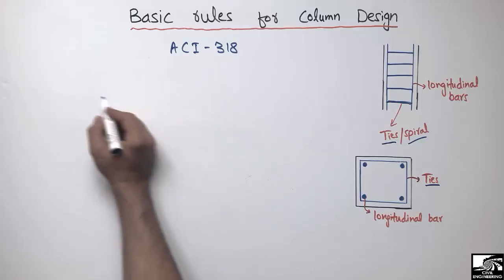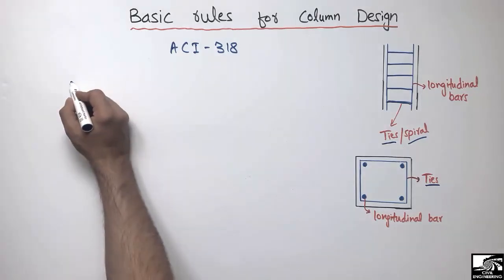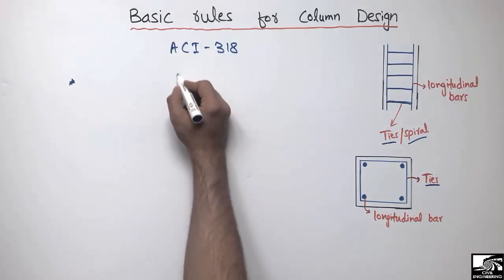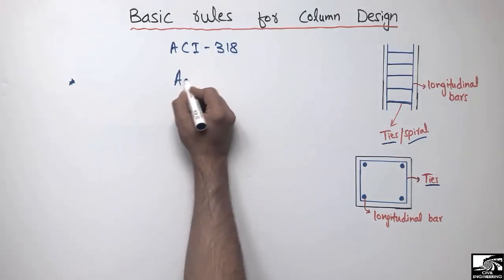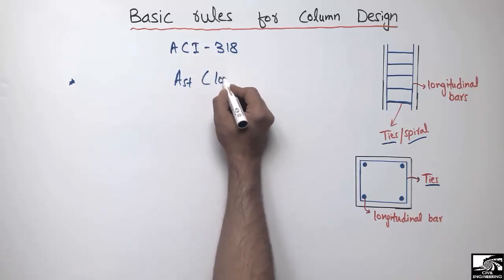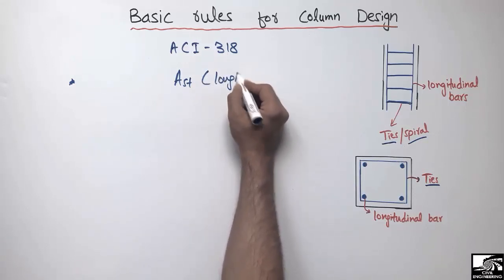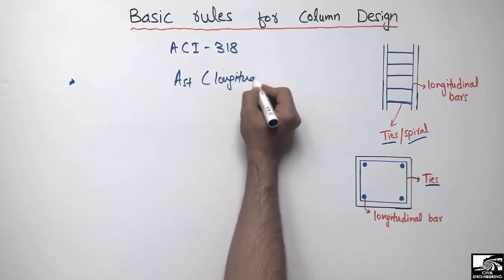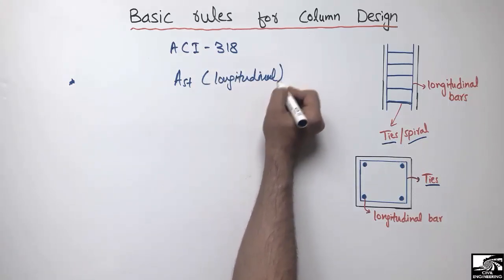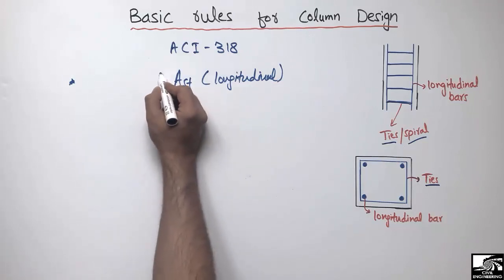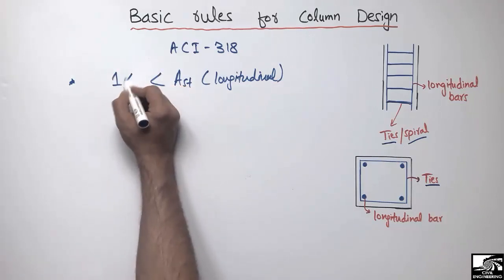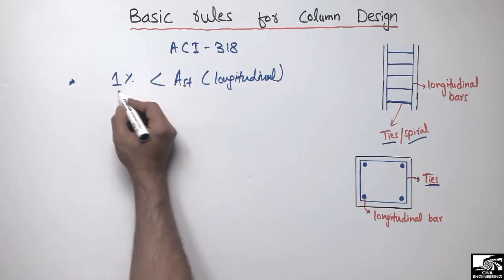The first rule for the design of column is that the area of the longitudinal steel bar should be greater than one percent of the gross area of the column, and it should be less than eight percent of the gross area of the column.